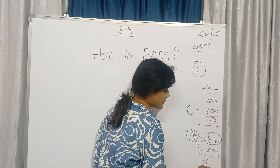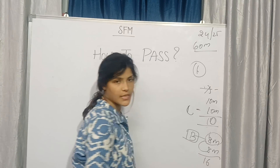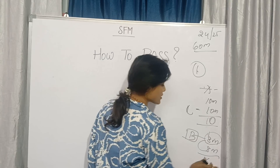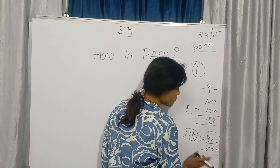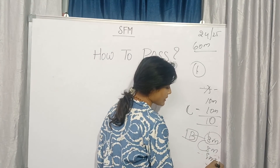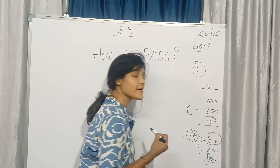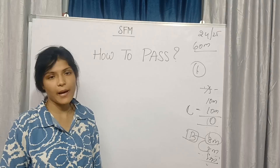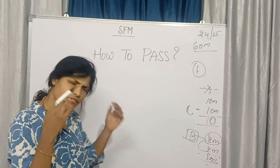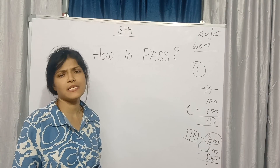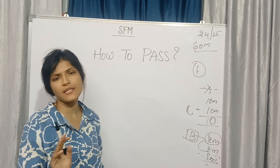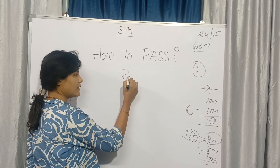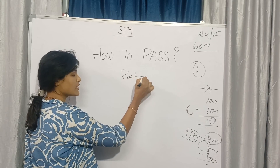In Part B, each question carries 8 marks. If you attempt 2 questions that is 16 marks total, or if you attempt 3 questions in Part B along with Part A and Part C, you will definitely get passing marks in the subject.